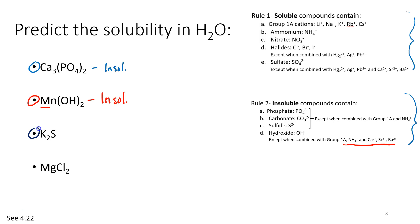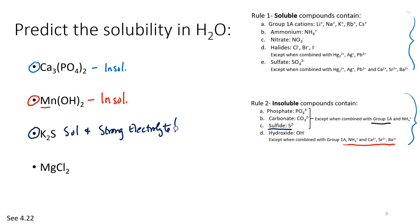How about this next one? Potassium sulfide. Well, we've got a rule for sulfides — they're insoluble except when combined with group 1A. This would be soluble and it would also be a strong electrolyte. That means in solution, potassium sulfide dissociates 100% to form two potassium ions and one sulfide anion.